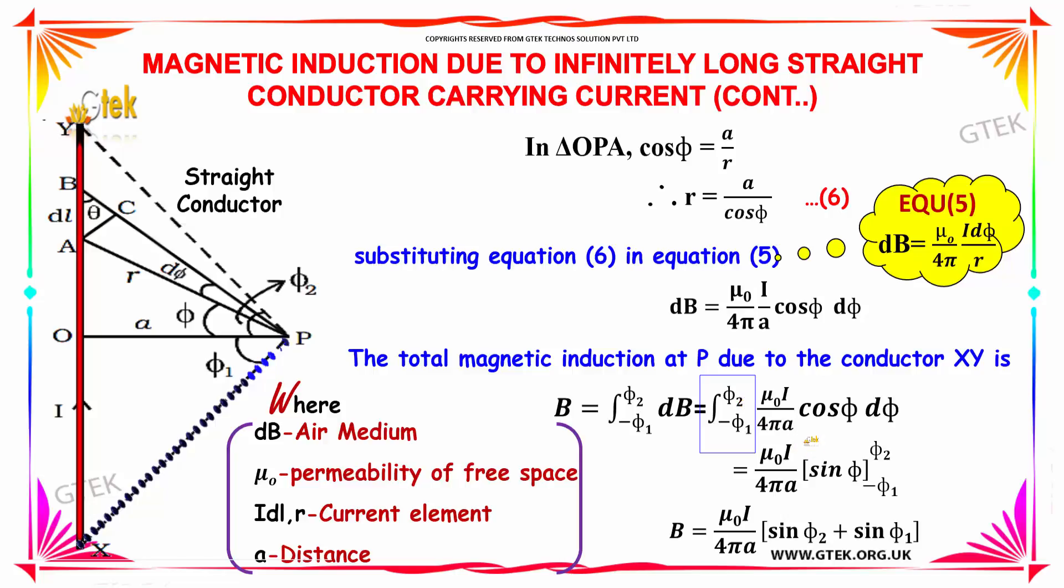Cos psi into dpsi will become sin psi. Substituting psi with psi1 and psi2, you got sin psi2 minus sin of minus psi1 which will become plus. So minus here, minus here will become plus here. This is the final equation we received.